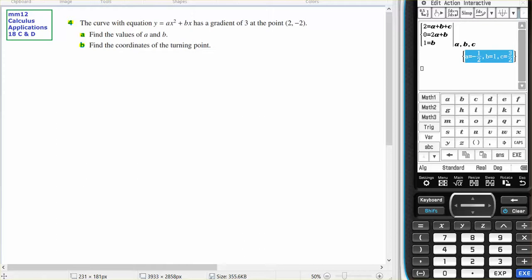The curve with this equation, so I have a quadratic, I have two unknowns, A and B. So I know Y equals AX squared plus BX. And I know it has a gradient of 3 at the point (2, -2).